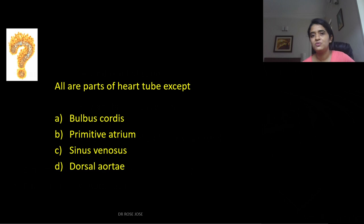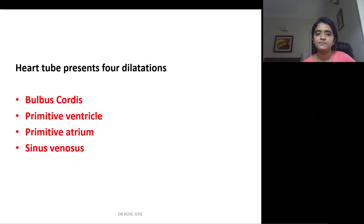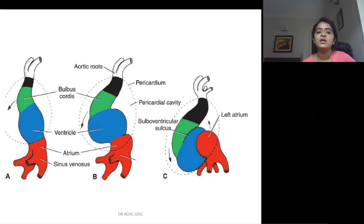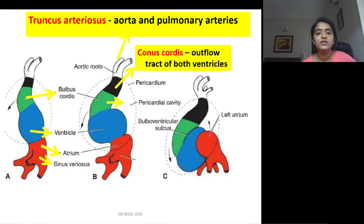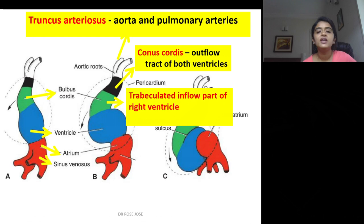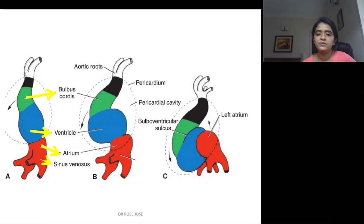The heart tube presents four dilatations from cranial to caudal end: bulbus cordis, primitive ventricle, primitive atrium, and sinus venosus. The truncus arteriosus gives rise to the aorta and pulmonary arteries. The conus cordis — the second part of bulbus cordis — gives rise to the outflow tract of both ventricles. The trabeculated inflow part of the right ventricle comes from the proximal portion of the bulbus cordis — these are the three derivatives of the bulbus cordis.